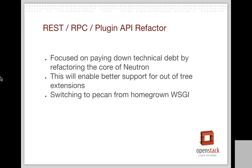This is one of the big items we've been discussing — focused around stability, scalability, and making the core of Neutron more evolvable. This work was discussed in Paris in multiple sessions and we're going to focus on it at our mid-cycle coding sprint next week. Two big things we're looking to get out of this are better support for out-of-tree extensions, and we plan to switch our homegrown WSGI over to Pecan, which is going to be a huge improvement.